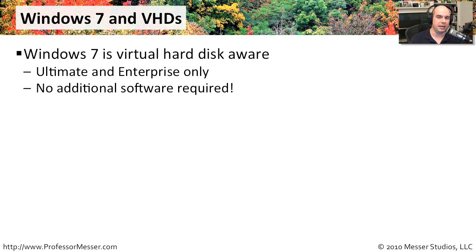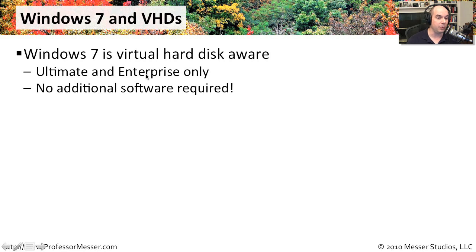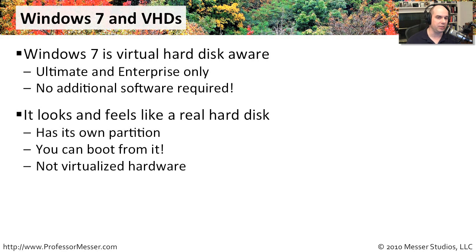If you've worked with virtualization technologies in the past, you know that working with virtual hard drives is something built into those technologies. You have one big file, and inside that one big file is your entire operating system file structure — all the individual files, all the partitions. On Windows 7, we've taken that idea to the next level. Windows 7 automatically knows how to use these virtual hard disks, only in the Windows 7 Ultimate and Windows 7 Enterprise versions, not Home Premium or Professional.